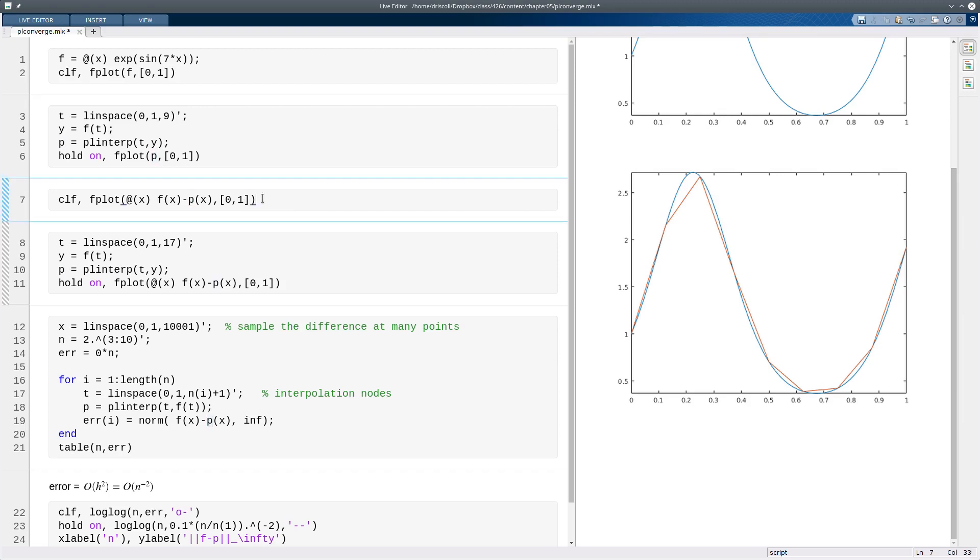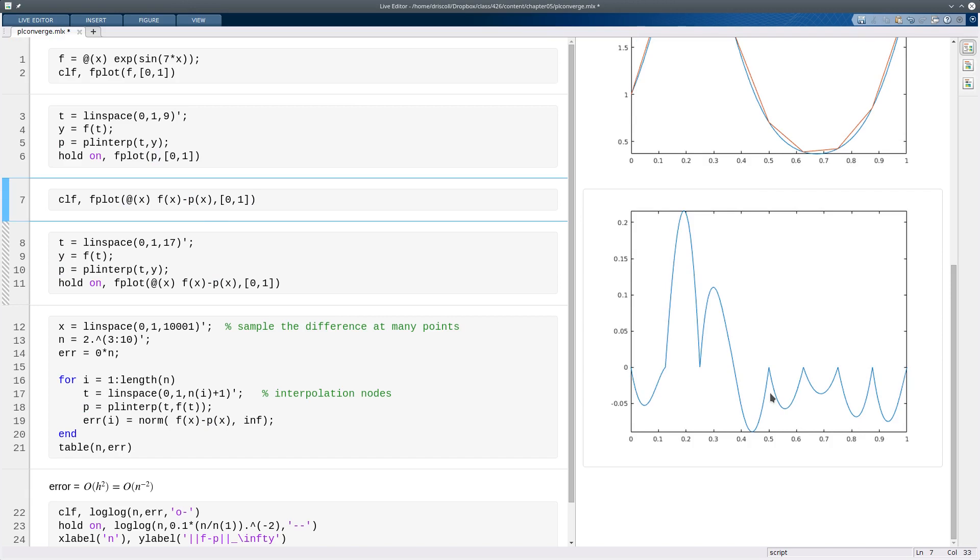Now for our purposes, it's going to be a little bit more instructive to look at the difference or the error between them. And so you get this weird-looking plot, but right, it has to go to 0 at all the nodes. And it's only piecewise smooth because the interpolant is piecewise linear.